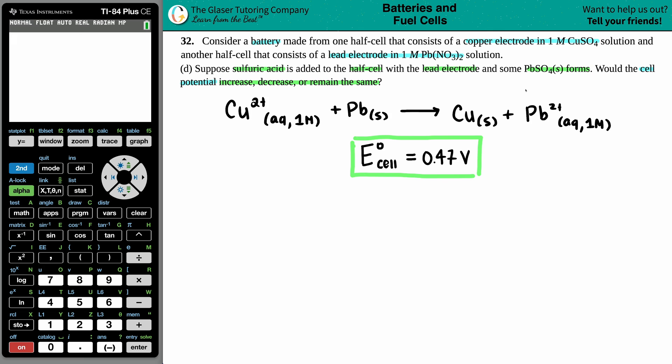Now, now they're saying that we're adding sulfuric acid to the lead electrode. So it seems like the lead electrode is going to be changing here. So I'm either talking about Pb solid here or the Pb2+, but they tell us that PbSO4 solid forms.